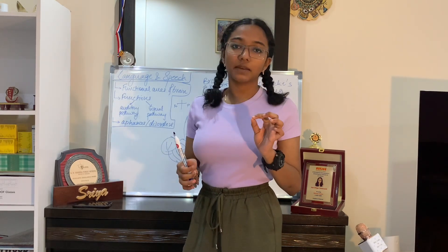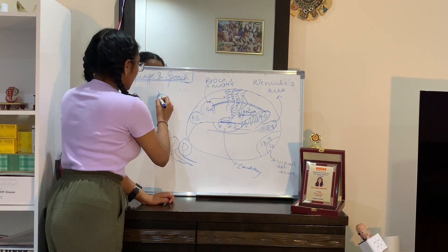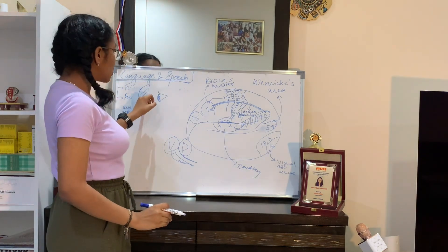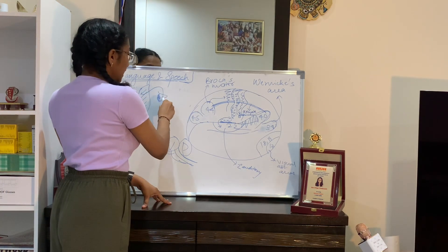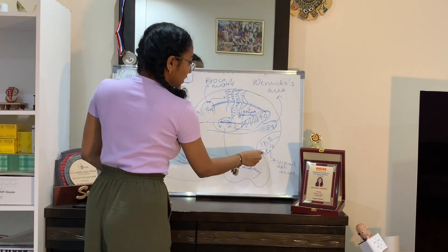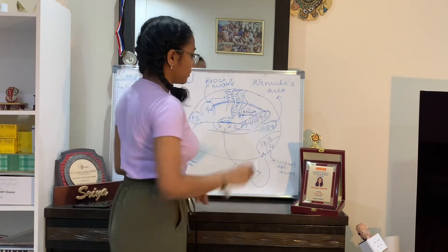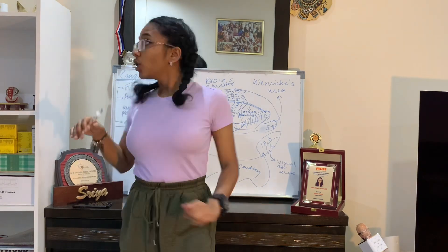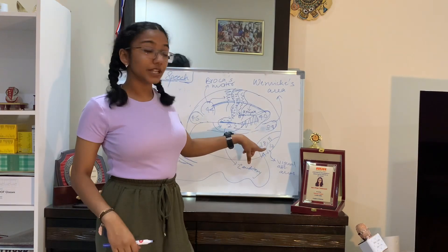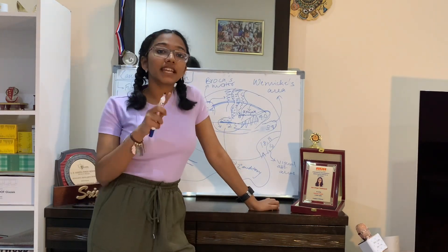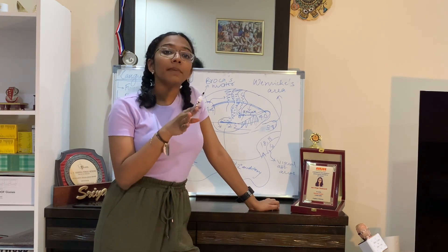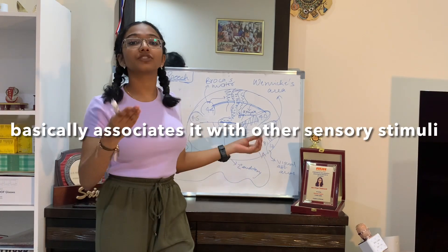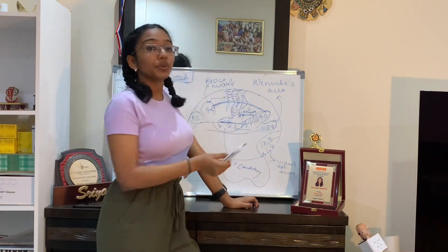Now the visual pathway is somewhat similar except for the starting steps. When our eye perceives an image of words, this image is sent via a long pathway to the primary visual cortex — area 17 — which receives the basic image of what we're seeing. Signals are then sent to the secondary visual cortex, which compares the image with previous memory, similar to how the secondary auditory cortex functions.